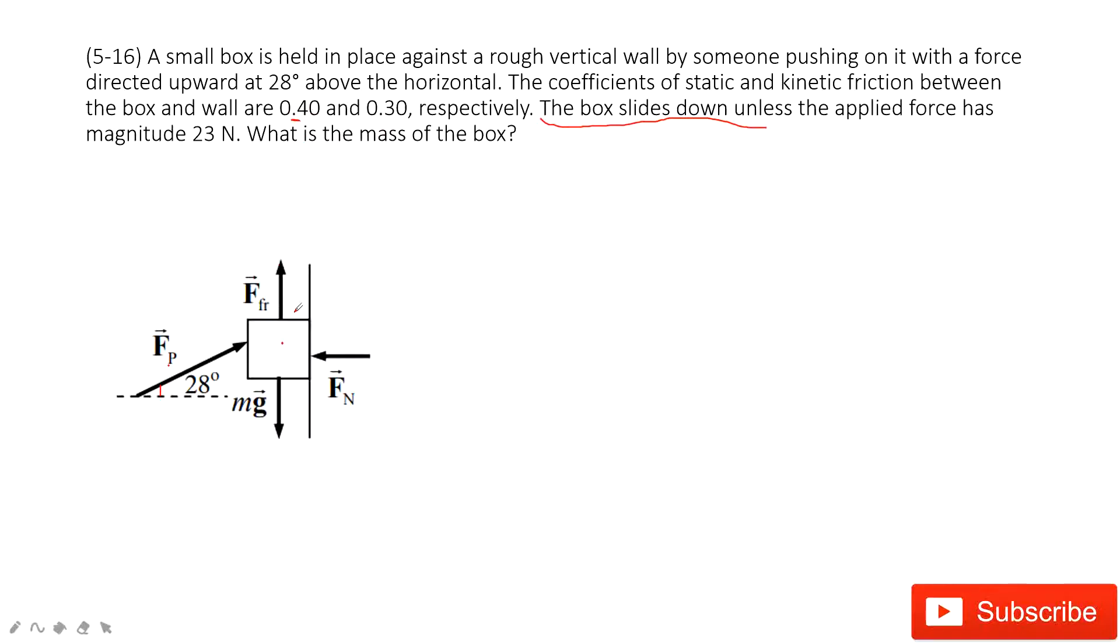And then we do the force analysis. We can see on this small box, we have the gravity, the friction, the normal force from the wall to the box and the force applied by the person. Of course, we can project the force by the person in x-component and y-component. So we have fp cosine theta and fp sine theta.